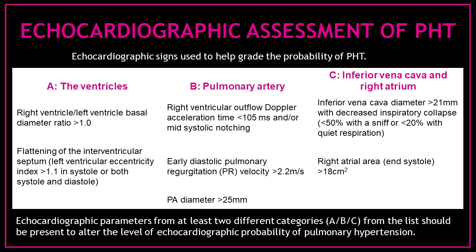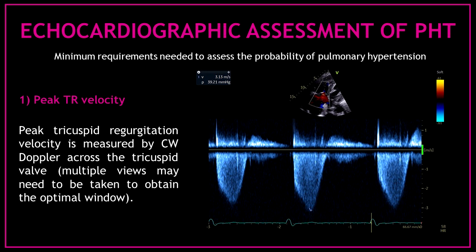Other echocardiographic markers are used to help grade the probability of pulmonary hypertension. At least two markers from three different categories should be present to alter the level of echocardiographic probability. The first category covers any changes to the ventricles, the second category covers any changes to the pulmonary artery, and the third category covers any changes to the inferior vena cava and right atrium. The first marker to measure is the peak tricuspid regurgitation velocity, measured by continuous wave Doppler across the tricuspid valve, taking multiple views to obtain the optimal window.